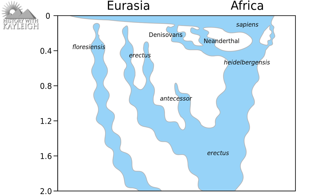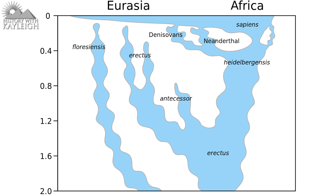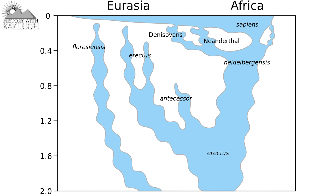Homo heidelbergensis is the most likely last common ancestor of the Denisovans, Homo neanderthalensis (the Neanderthals), and Homo sapiens — us modern humans. The Denisovans seem to have emerged around 500,000 years ago and disappeared around 30,000 years ago. Neanderthals seem to have emerged around 430,000 years ago — at least that's how far back the oldest found fossils date, though they could have emerged earlier. We know that Neanderthals disappeared around 32,000 years ago, and I have several videos exploring the possible reasons for their extinction.